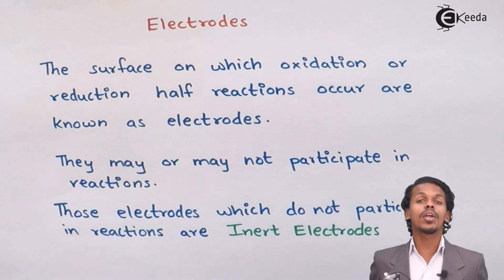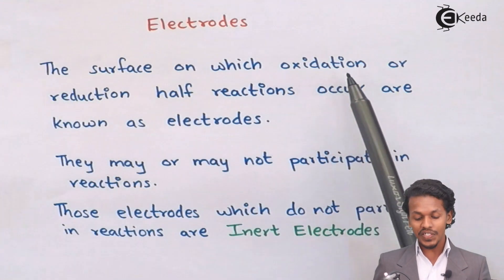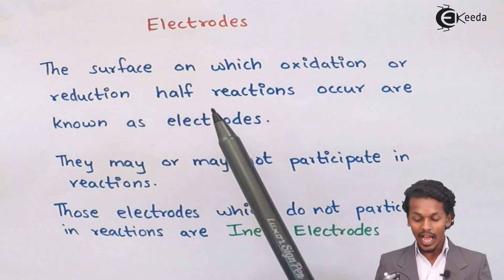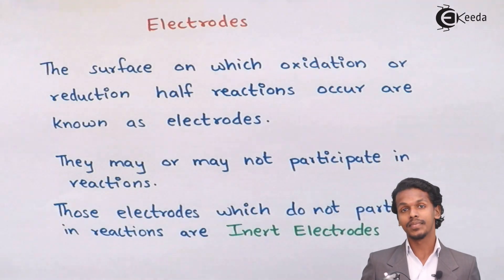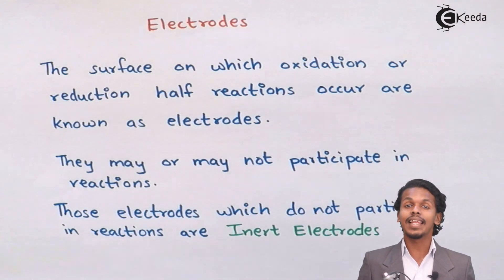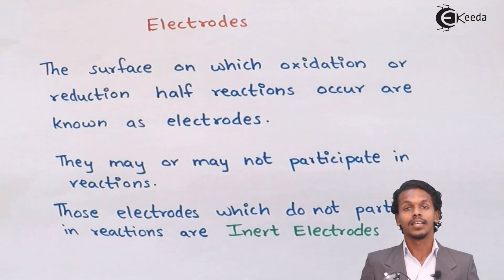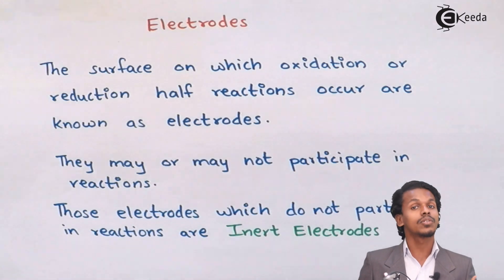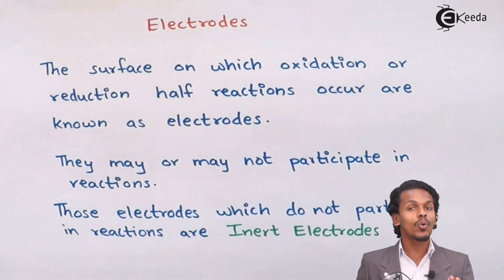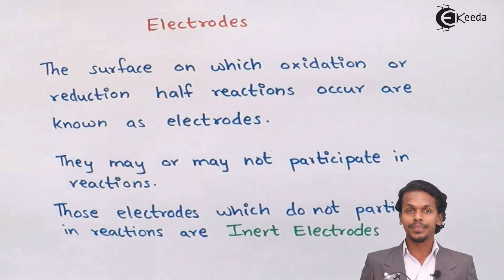Let me talk about what an electrode is. An electrode is nothing but the surface on which oxidation or reduction half-reactions occur. In electrochemical cells as well as galvanic cells, electrodes play a very necessary part in contributing to the flow of electricity and to the chemical reactions.